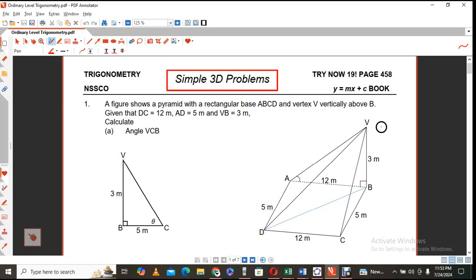And vertex V all the way up to the apex there. And it is above, vertically above B. Given information is that DC is equal to 12, which means AB is also equal to 12, because opposite sides of a rectangle are equal in length. AD is equal to 5. Therefore, BC is also equal to 5.